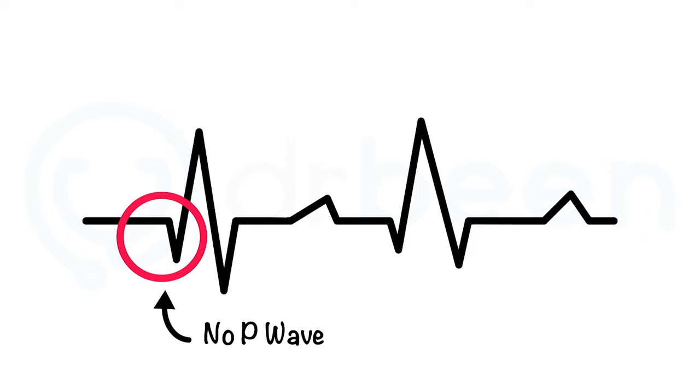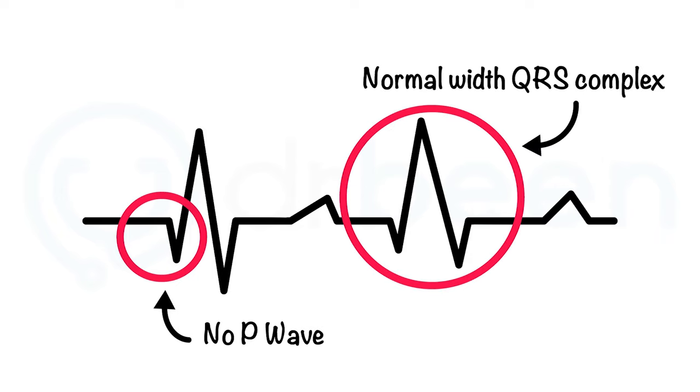3. No P waves at all as the atrial depolarization is buried in the QRS complex. 4. QRS complex is usually normal in width.